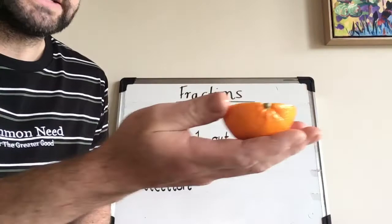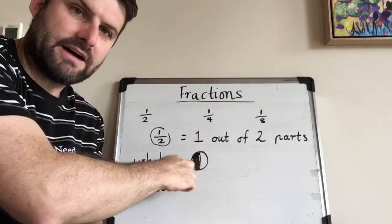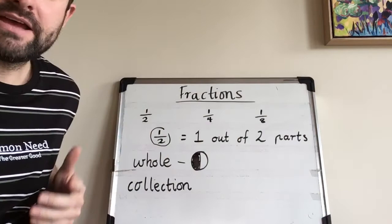But this is a whole. So we're looking at fractions of a whole. That's half of a whole. This is half of a whole and this is half of a whole. All right, let's look at fractions of a collection.